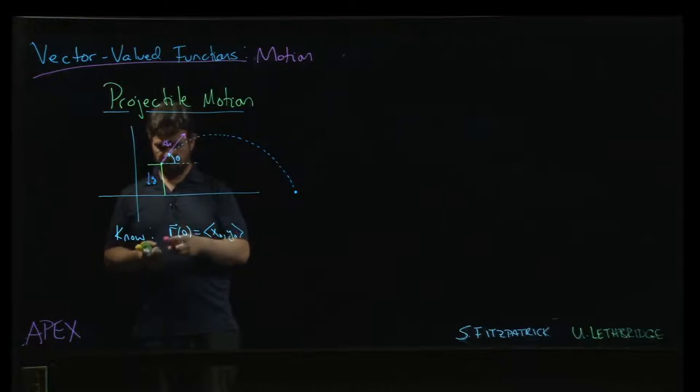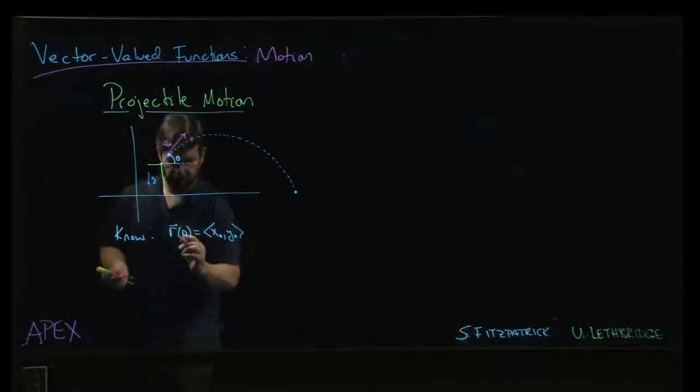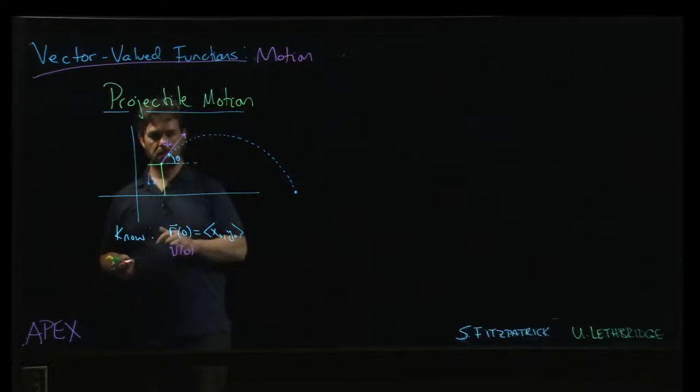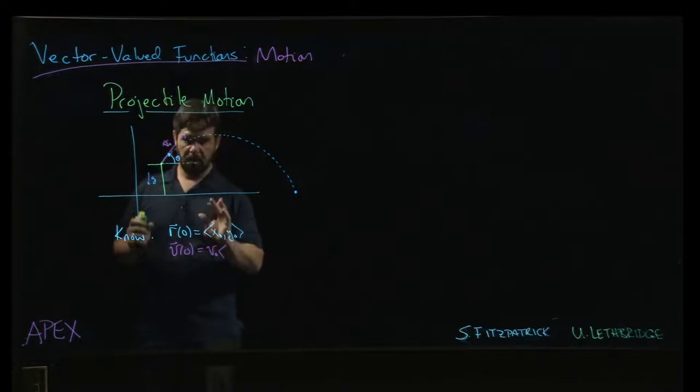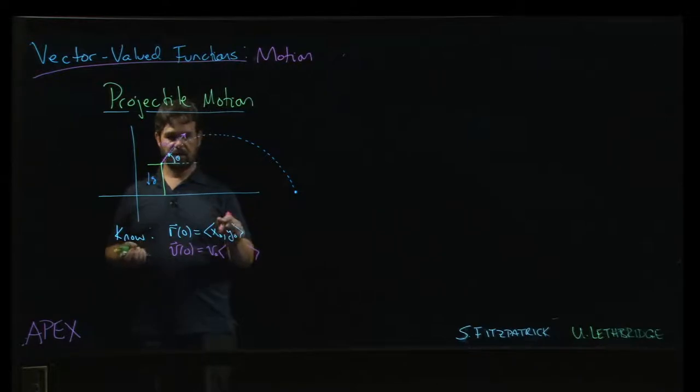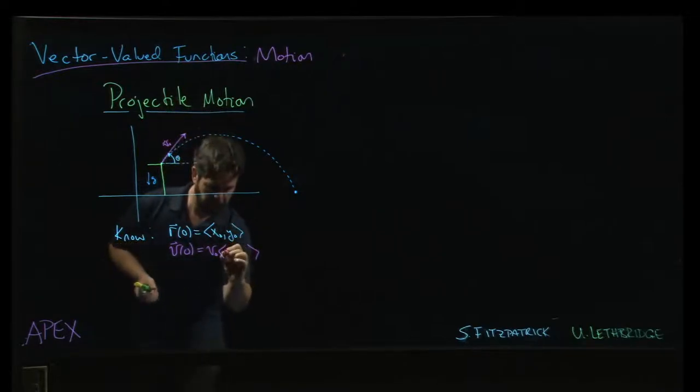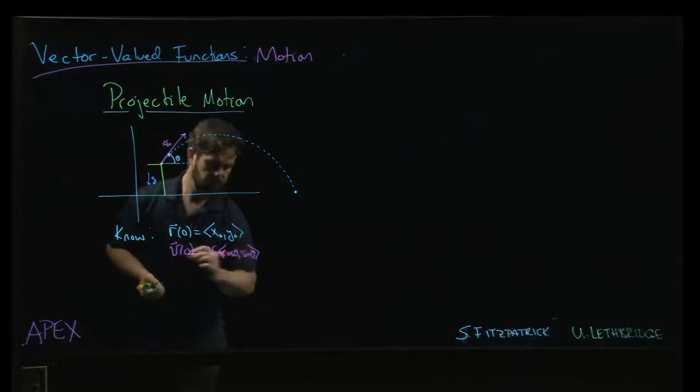We know the initial velocity - V of 0, this V naught if you like. It's going to be some initial speed - that's the magnitude - and then we're going to multiply by a unit vector. What should that unit vector be? We want to account for this angle theta, so this should be cosine theta, sine theta.